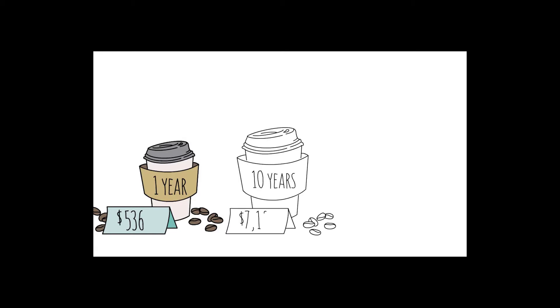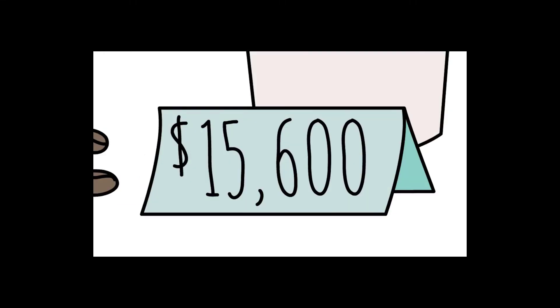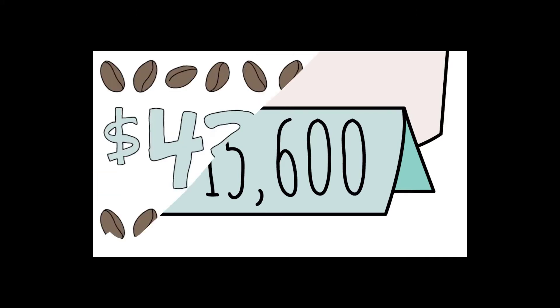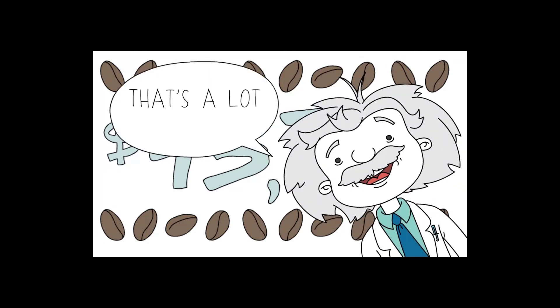Now think about what would happen if you started putting ten dollars a week aside today and it had thirty years to grow. While you are only putting fifteen thousand six hundred dollars aside, with compound interest you could actually have forty-three thousand seven hundred nine dollars. That's a lot of coffee.